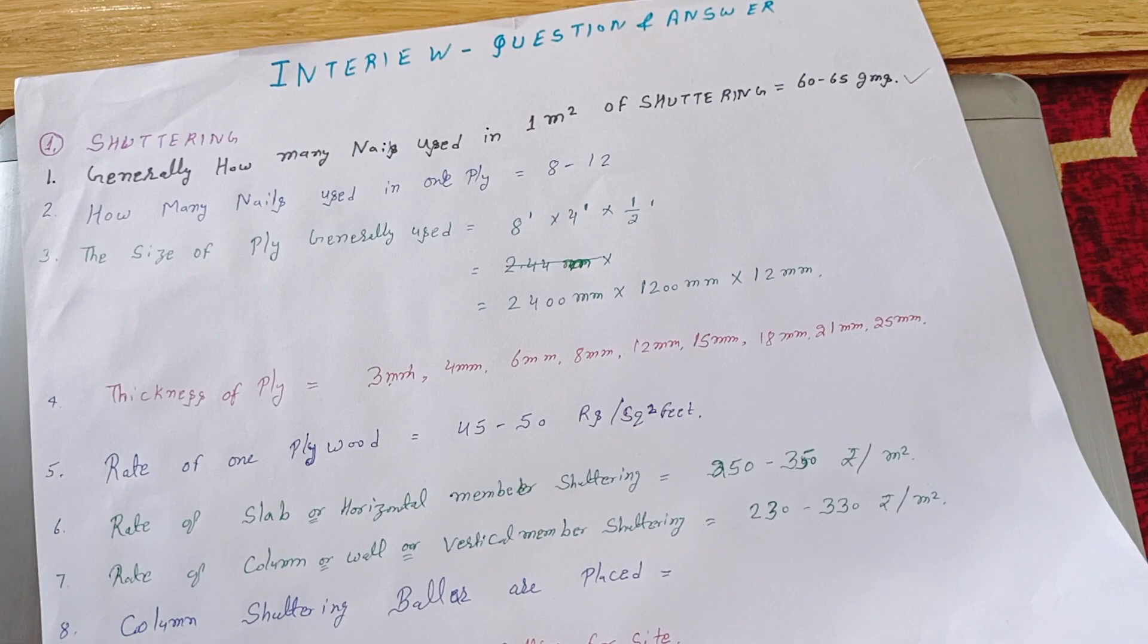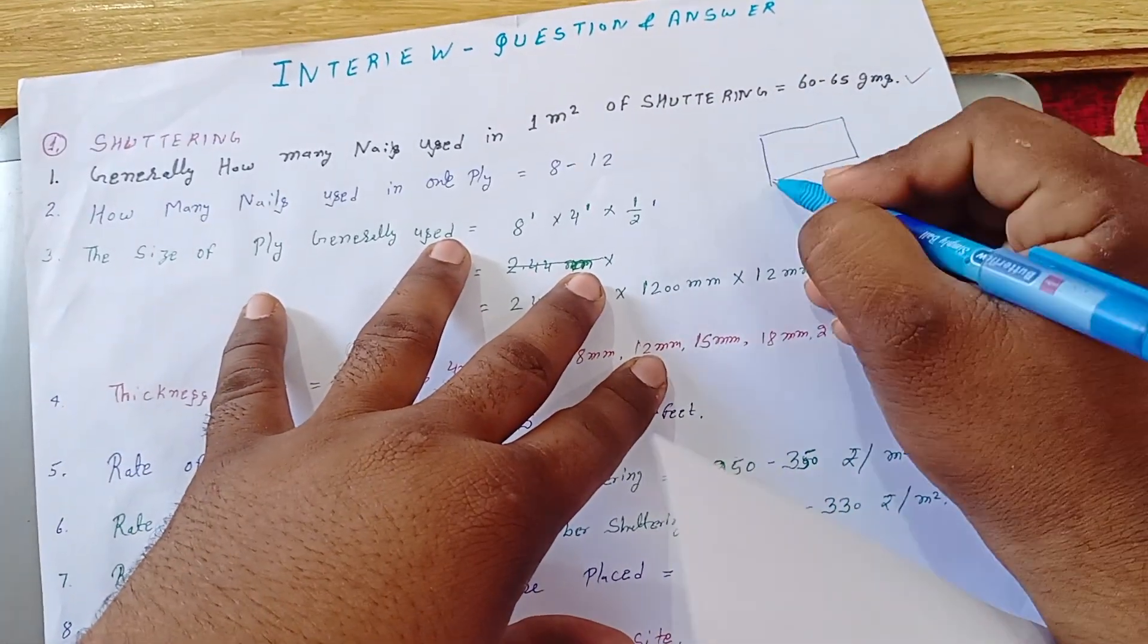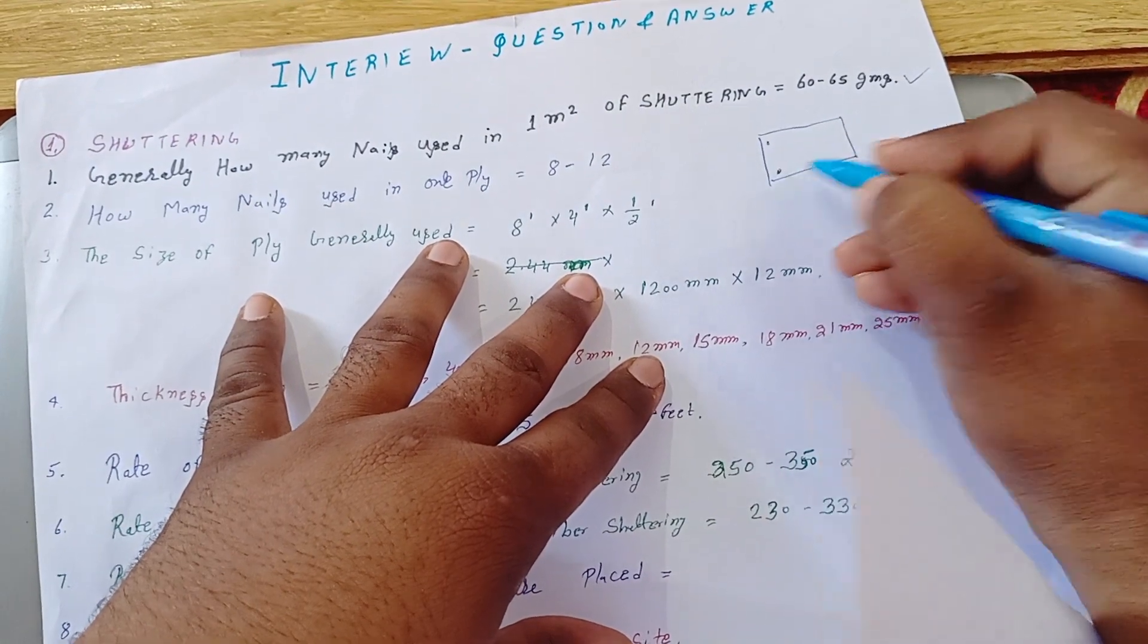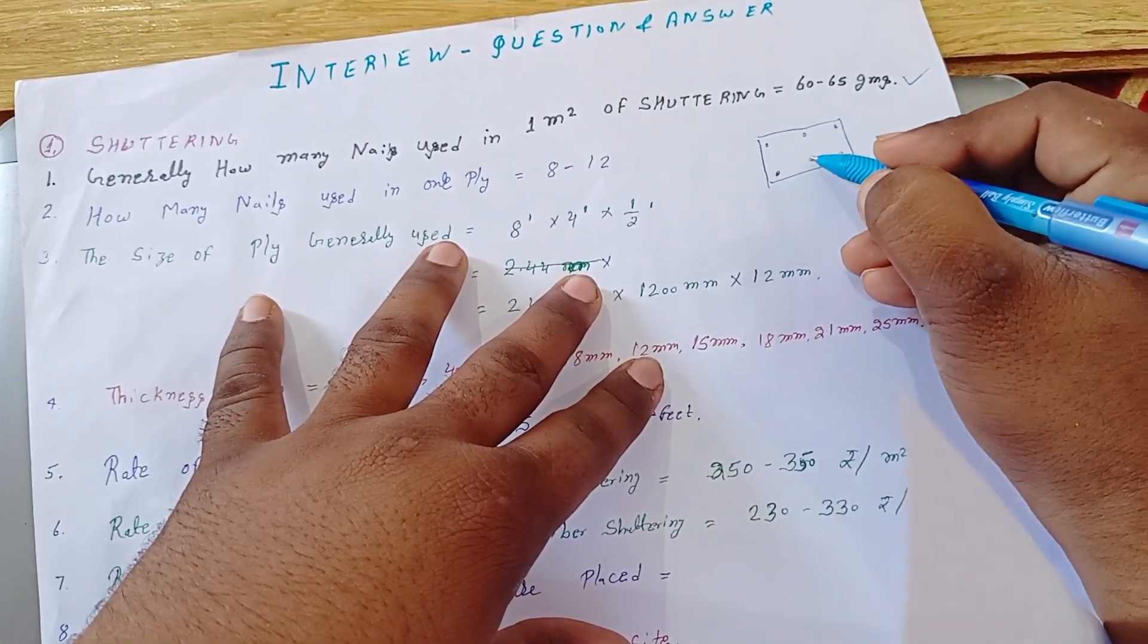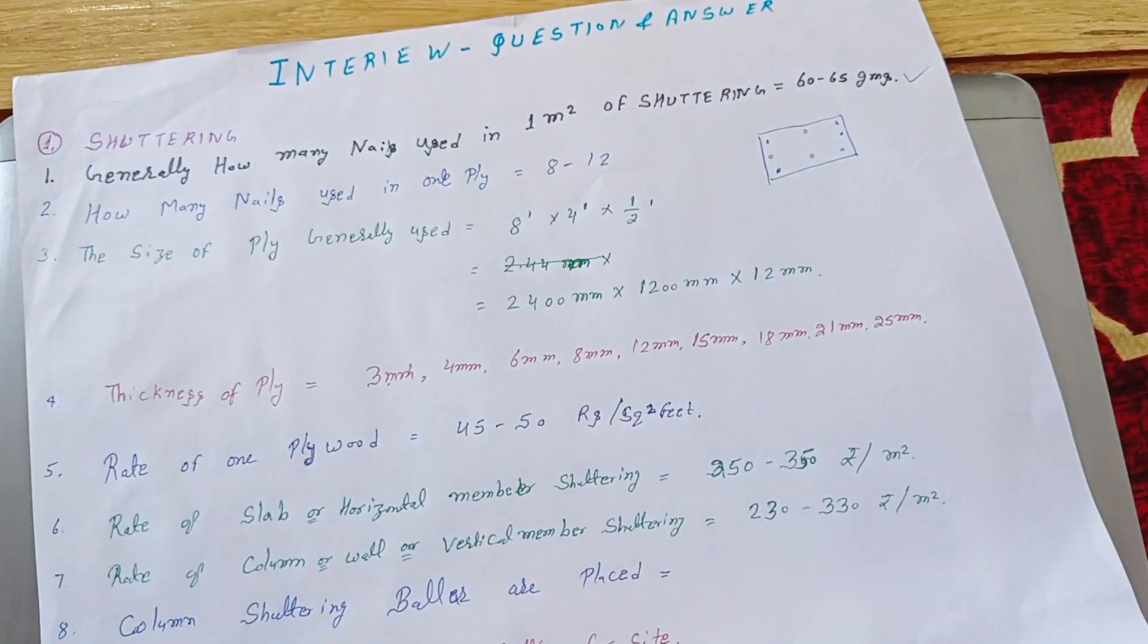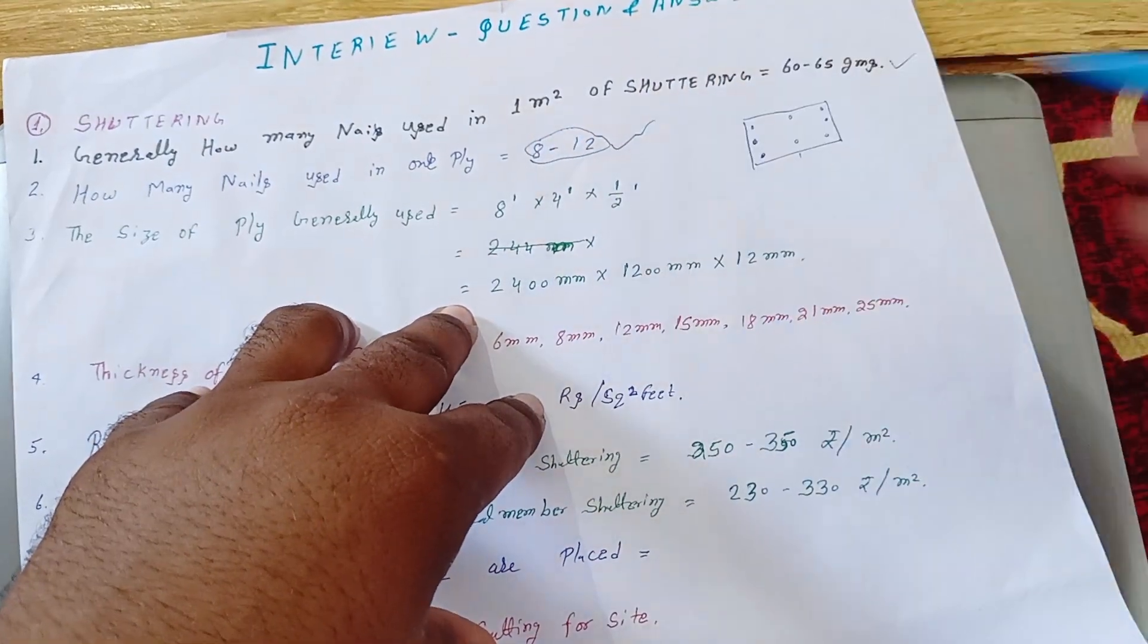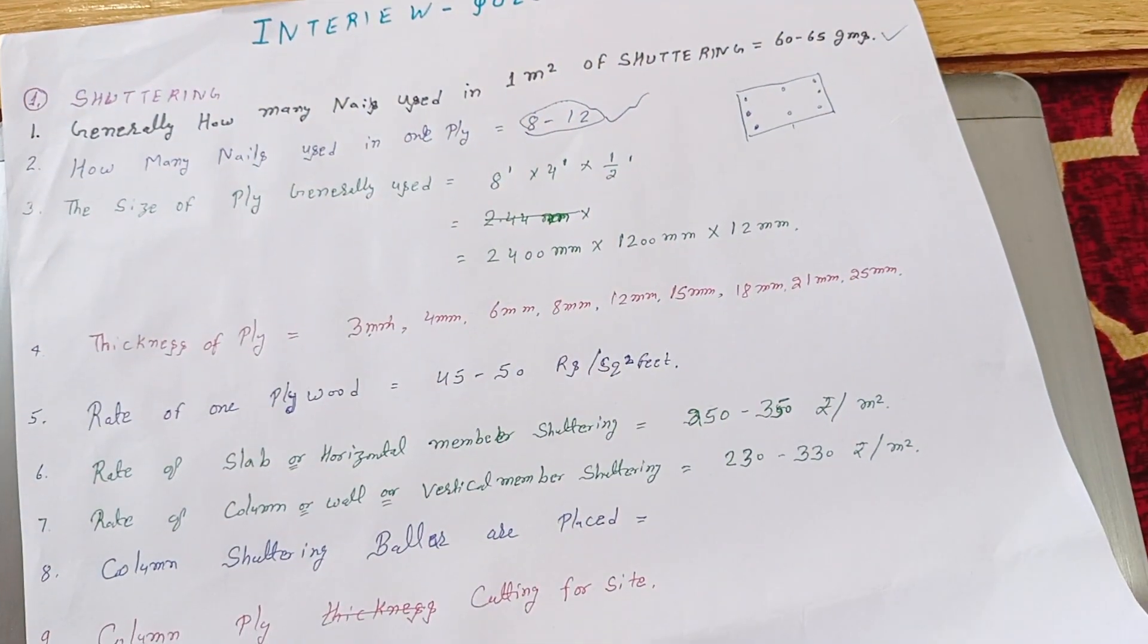Then they can ask how many nails used in one ply. So generally our one ply is like this. So we can use 1, 2, 3, 4, 6, 7, 8. We can use generally 6 to 8, 8 to 12 number of plies. In general we can use, I can show that.